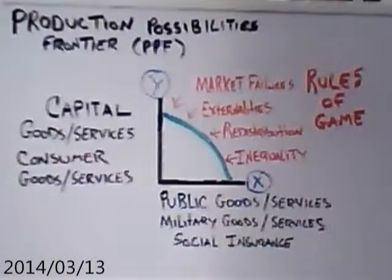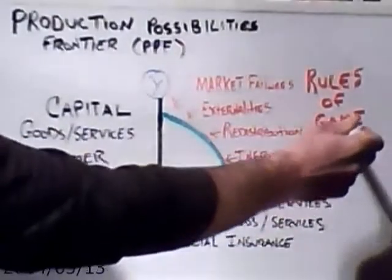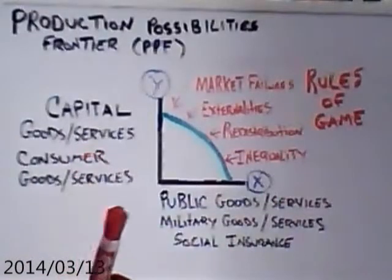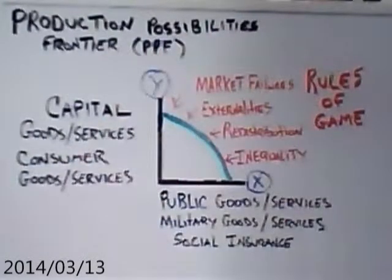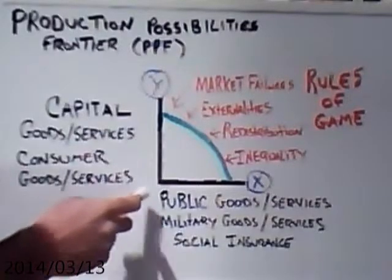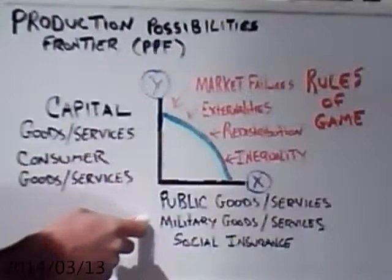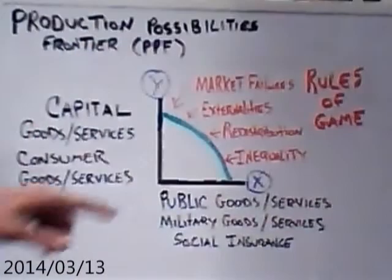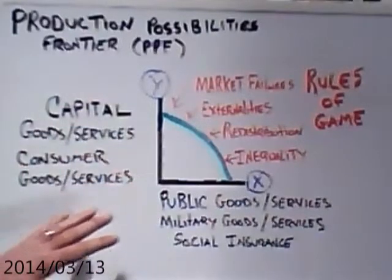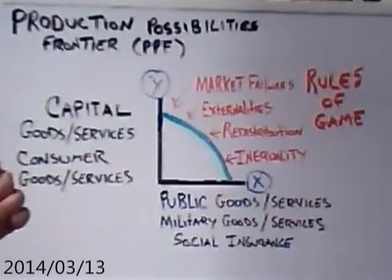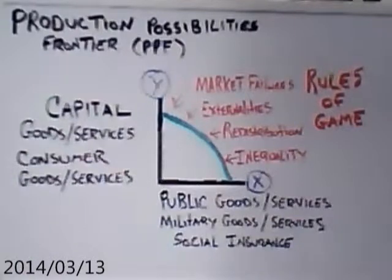Just to review where we get our law from — where we get the rules of the game from — the first source is the Constitution of the United States, which sets out the general rules of the economic game. It also has specific provisions to provide public goods and services and military goods and services. This video, we're going to focus on the other sources of law: statutes and legislation, administrative regulations, and judicial precedents.